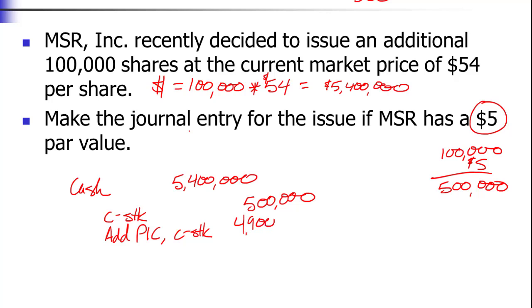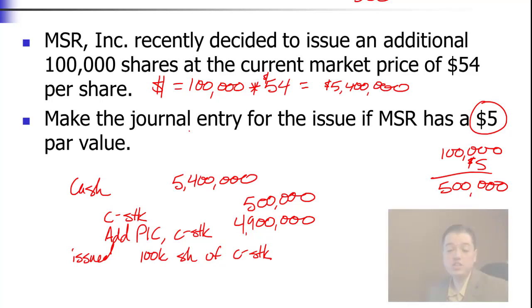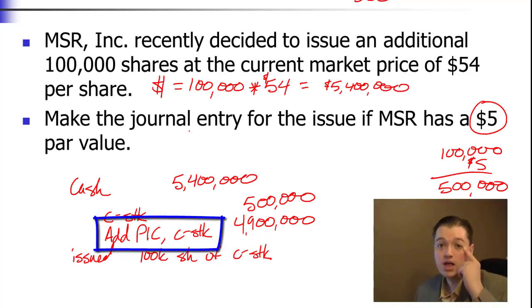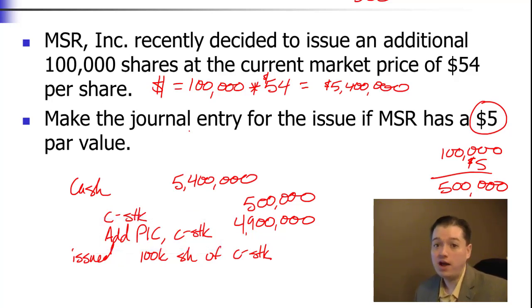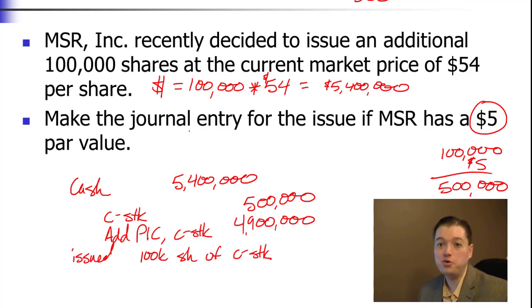To make this balance, $4.9 million needs to go into additional paid-in capital common stock — issued 100,000 shares of common stock. Notice I call this 'additional paid-in capital common stock,' not just 'additional paid-in capital.' That's really important because we have a number of additional paid-in capital accounts: one for common stock, one for preferred stock, one for treasury stock, and others when we start issuing stock options. So you do need to differentiate — make sure you don't forget the label.